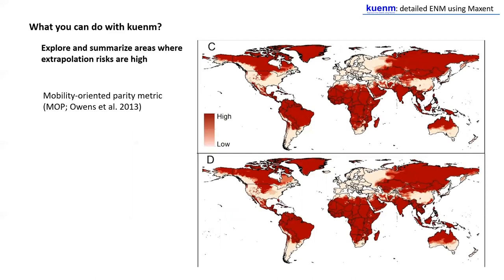In KUNHM, you can also explore and summarize extrapolation risks using the Mobility Oriented Parity metric — the MOP analysis — which is detailed in the way it considers irregularities in the environmental cloud of points in the calibration area and compares that cloud against the environmental conditions in the projection area. All those processes are implemented in KUNHM.